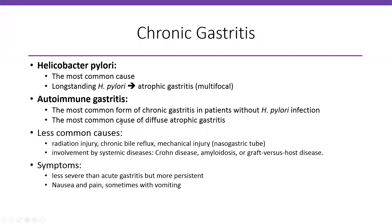What can cause chronic gastritis? The most common cause is Helicobacter pylori infection. Long-standing H. pylori infection can lead to atrophic gastritis, often multifocal. Another cause is autoimmune gastritis, the most common form of chronic gastritis in patients without H. pylori infection and the most common cause of diffuse atrophic gastritis. Less common causes include irradiation injury, chronic bile reflux, mechanical injury like nasogastric tube, and systemic diseases like Crohn's disease, amyloidosis, and graft-versus-host disease.